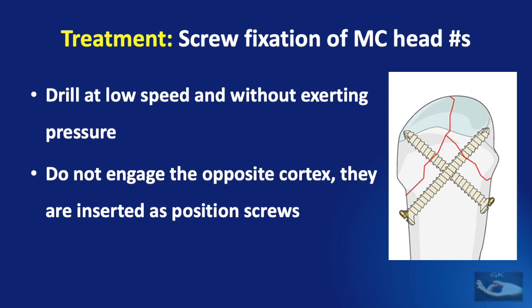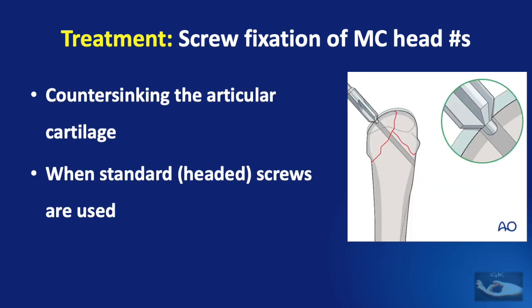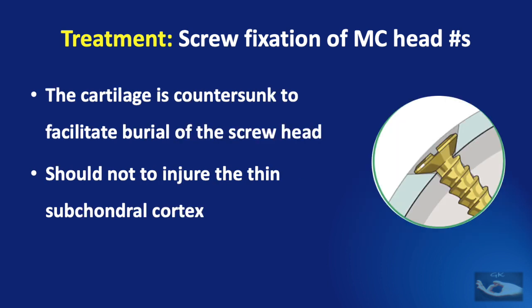Care must be taken not to perforate the articular cartilage. Drilling must be done at low speed without pressure to avoid thermal and mechanical damage. Since the opposite cortex is not engaged, position screws threaded throughout are used. For small fragments, retrograde fixation is performed — screws inserted through the articular cartilage — and the heads must be buried under the cartilage by countersinking. This countersinking should not injure the thin subchondral cortex.